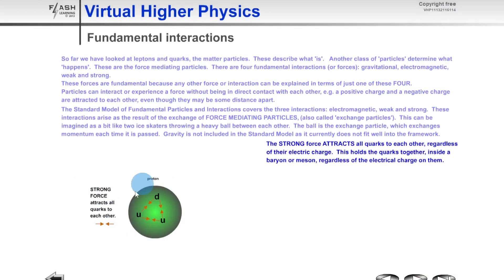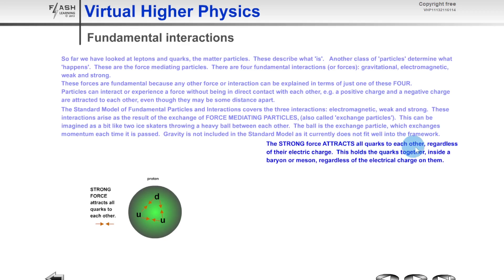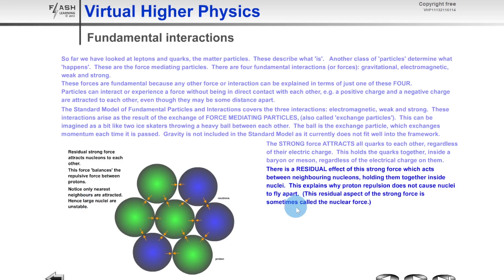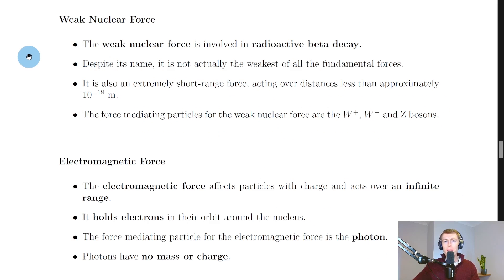Looking at this diagram of the proton, it shows that the proton is made up of two up quarks and a down quark. The little arrows between the quarks represent the strong nuclear force acting between them. The strong force attracts all quarks to each other regardless of their electric charge. There is also a residual effect of this strong nuclear force which acts between neighbouring nucleons, holding them together inside nuclei. This explains why proton repulsion does not cause nuclei to fly apart.